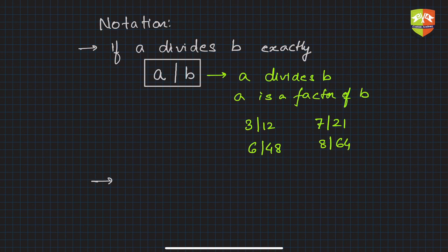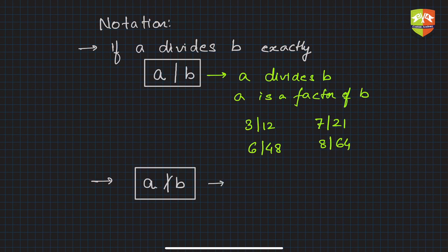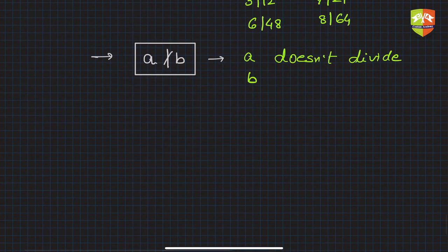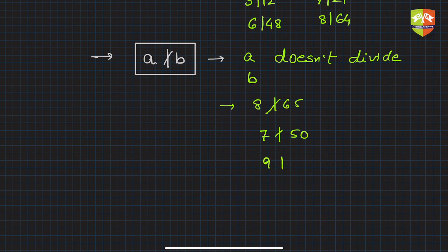Similarly, if a does not divide b, we write a∤b (a with a slash through the bar). This means 'a does not divide b.' Examples: 8∤65, 7∤50, 9∤83, and so on.